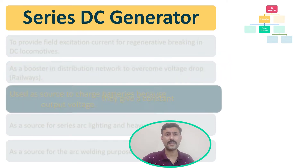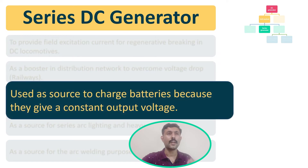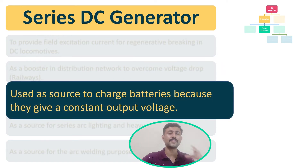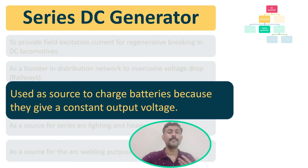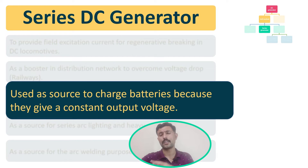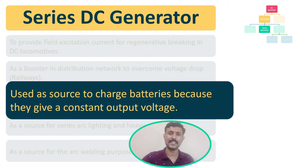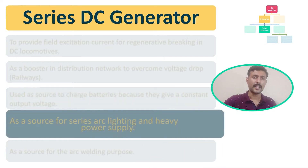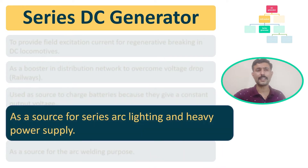The next application of the series DC generator is that it can be used as a source to charge batteries, because it can give a constant output voltage. This is the reason behind using this DC generator to charge batteries.